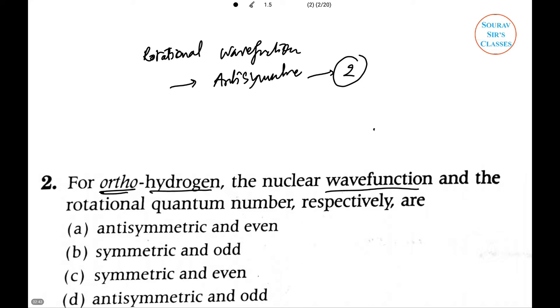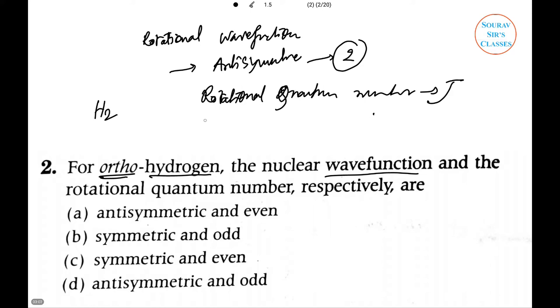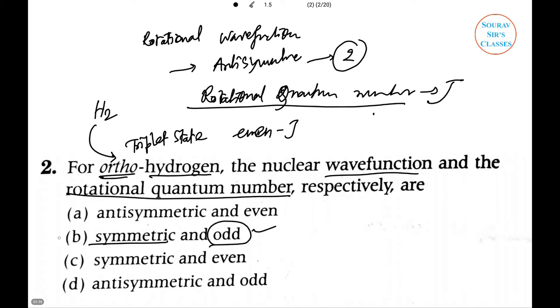These are antisymmetric with respect to permutation of two protons, corresponding to odd values of the rotational quantum number J. If the spins of H2 protons are unpaired forming a triplet state, this is called ortho-hydrogen. The even J levels do not exist. Under these circumstances, the wave function is symmetric and the rotational quantum number is odd. Option B is correct.